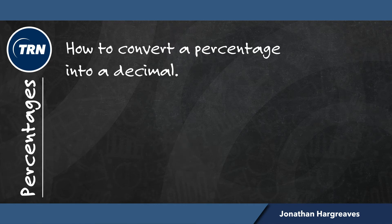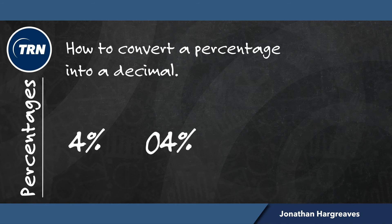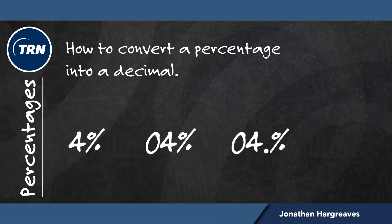So let's look at a single figure percentage — in this case 4%. Because it's a single figure and we have to move the decimal place two points, we place a zero before the 4. So 4% becomes 04%. We move our decimal place and now we have 0.04 as a decimal.